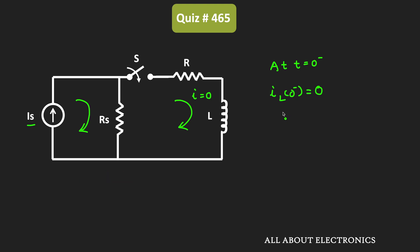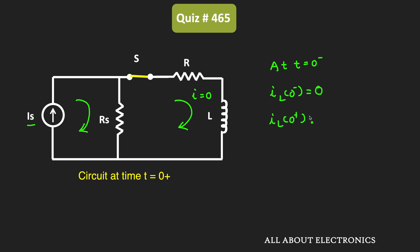So now at time t is equal to 0+, this switch S will get closed. As you know, the inductor opposes the instantaneous change in the current. That means at time t is equal to 0+, the current through the inductor should remain 0. So Il(0+) should also be equal to 0. That means at time t is equal to 0+, this inductor will act as an open circuit.